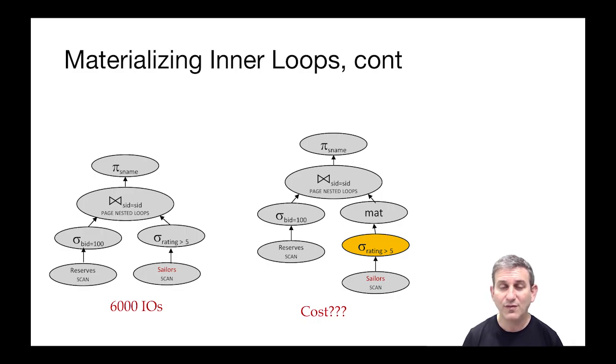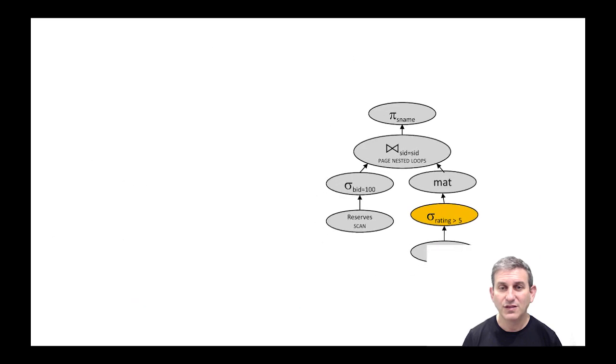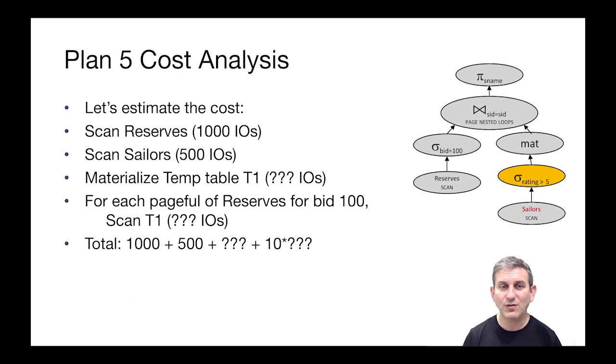Let's look at the cost. We're going to scan Reserves, that's a thousand IOs. We're going to scan Sailors once, that's 500 IOs. And we're going to materialize this temp table T1, which is some number of IOs to write the output of the selection. We know the selection is about half of the tuples in Sailors, so that should be a write of 250 blocks.